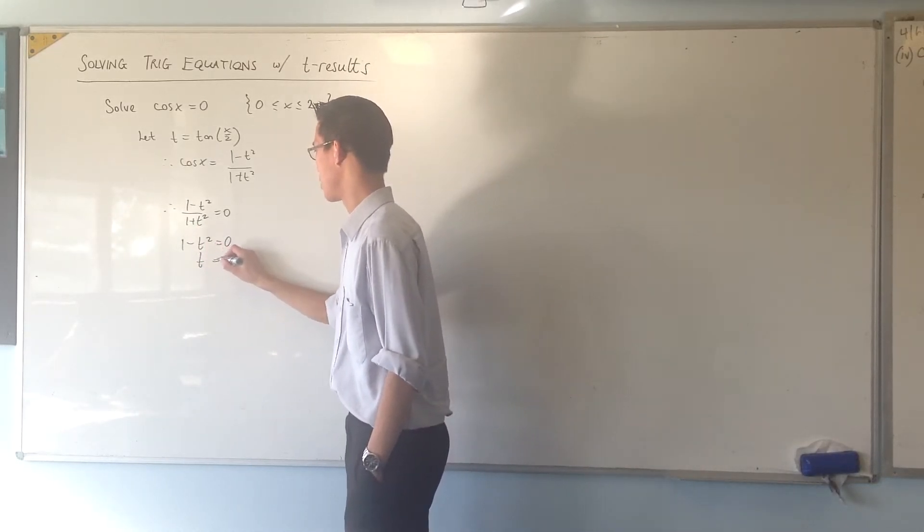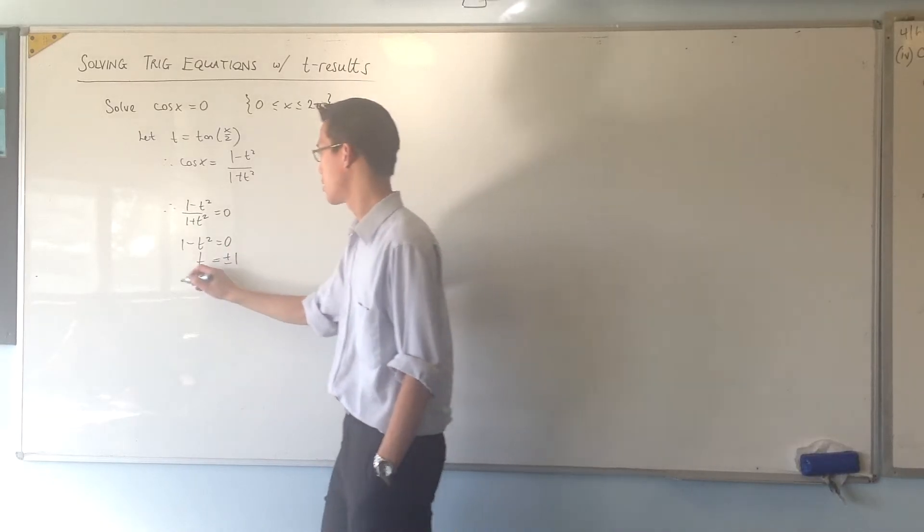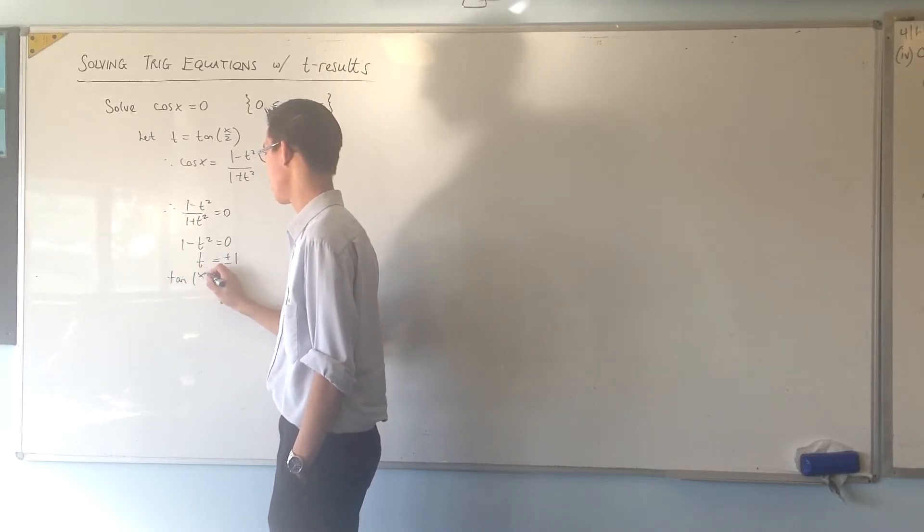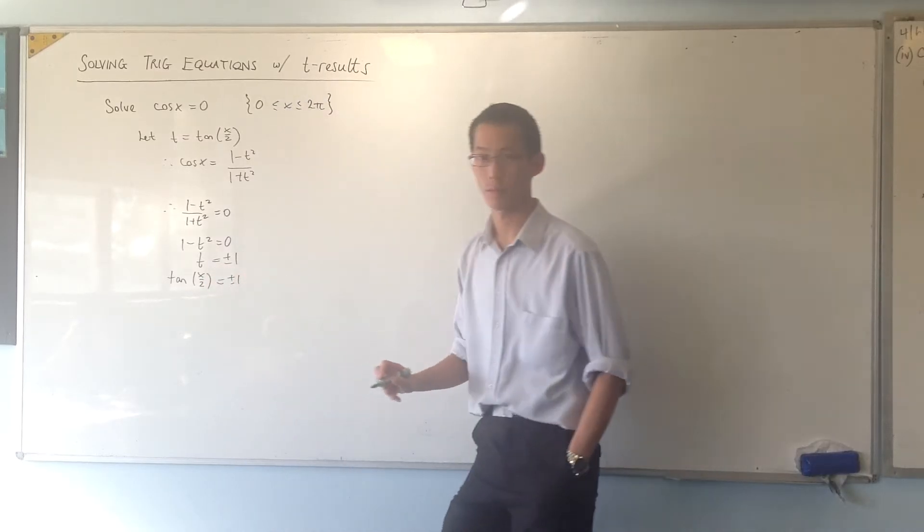Now, that has two solutions, plus or minus 1. So that means tan of x on 2 has two solutions, plus or minus 1.